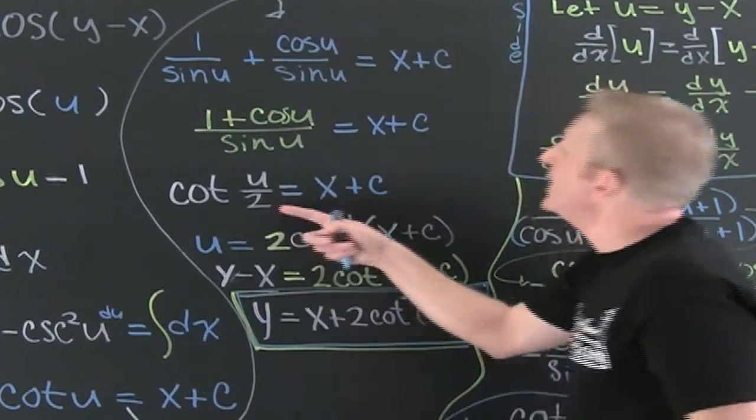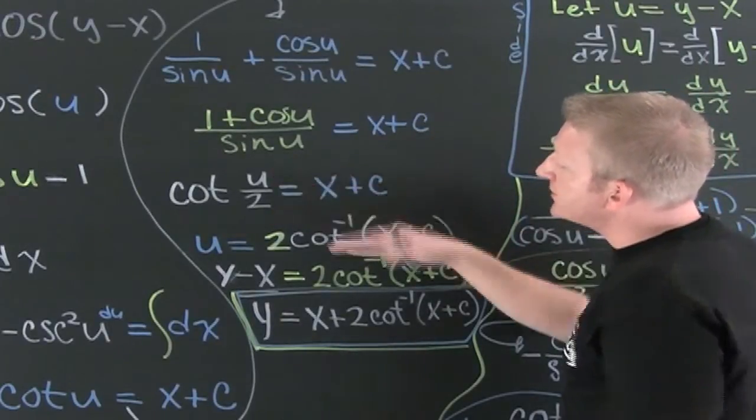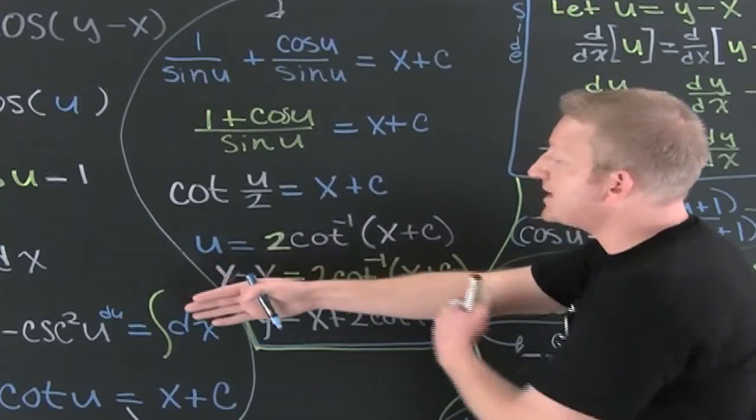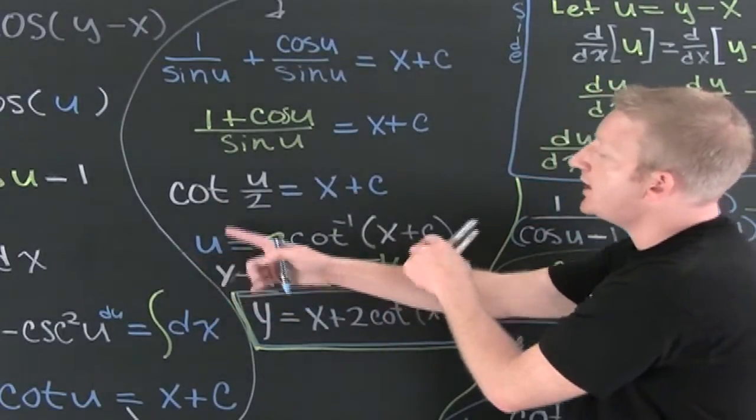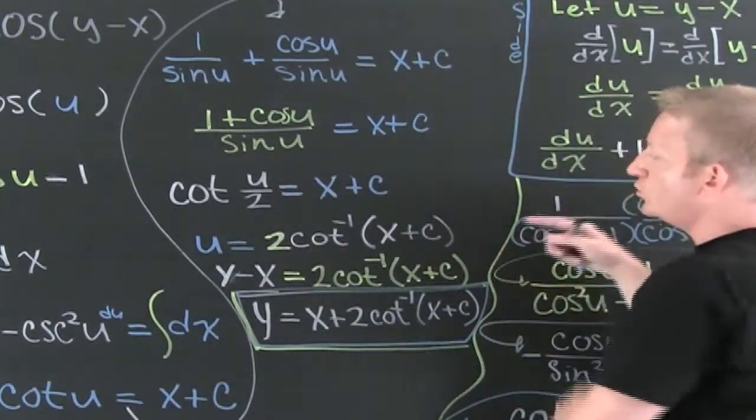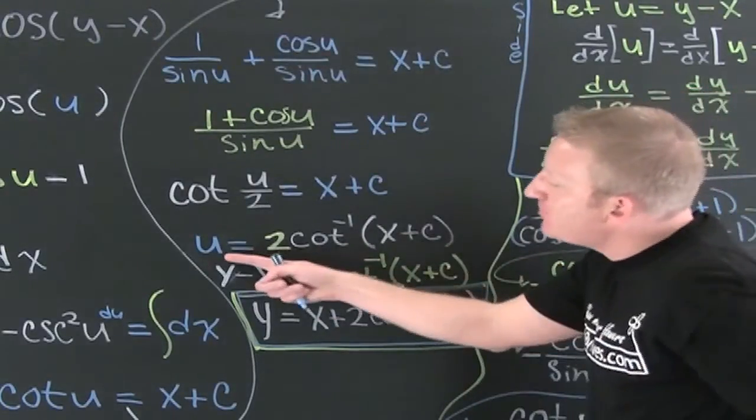I wanted to do that so I could take the inverse cotangent of both sides. I took the inverse cotangent of this side and then I multiply both sides by two. So now that I got this guy I can back substitute my u.